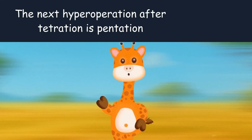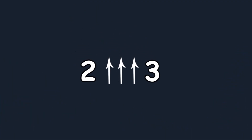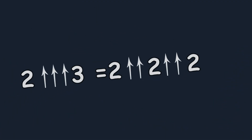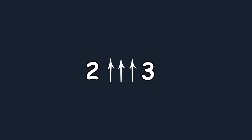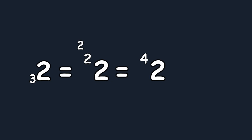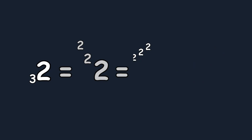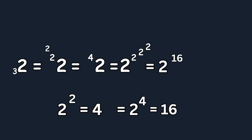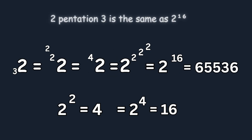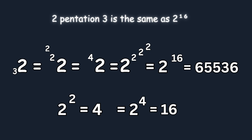The next hyperoperation after tetration is pentation. For example, two pentation three can be written as the repetition of tetration: two pentation three equals two tetration two tetration two. The alternative notation puts the exponent below and to the left. So two pentation three equals two tetration two tetration two, which equals two tetration four, which in turn is two to the power of two to the power of two to the power of two. Doing the calculation: two to the power of two equals four, two to the power of four equals sixteen, and two to the power of sixteen equals 65,536. So two pentation three equals two to the power of sixteen.